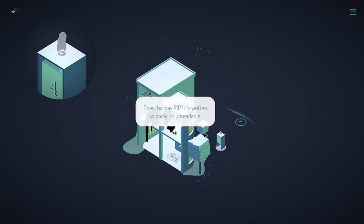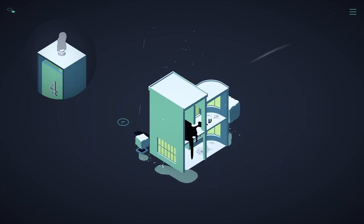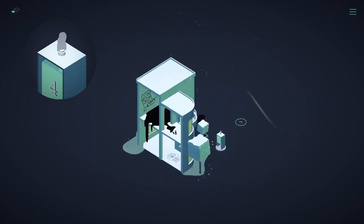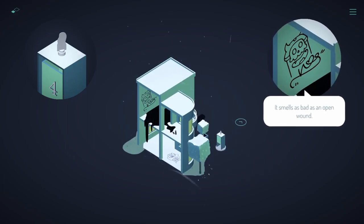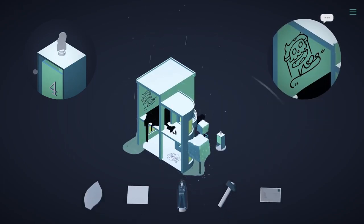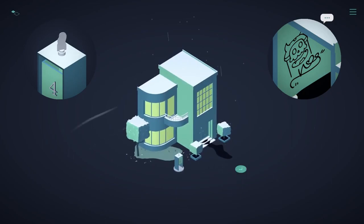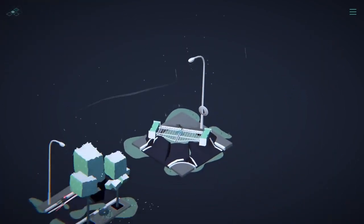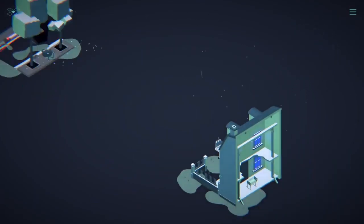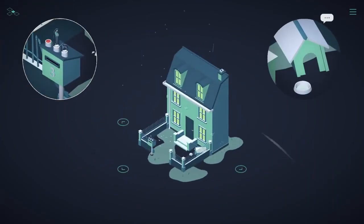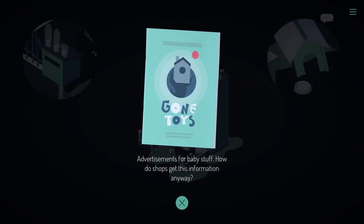Does that say error IP? It's written so badly, it's unwittable. This smells as bad as an open wound. Yeah right, we will be destroying others property. At a very angeness sleep for baby stuff. How do shops get this information anyway?